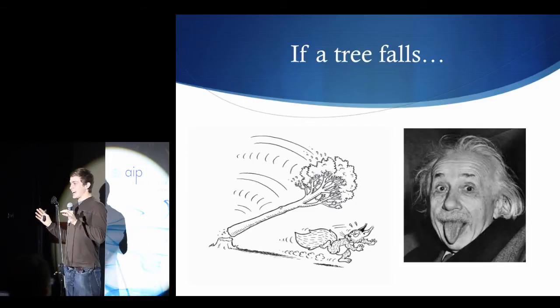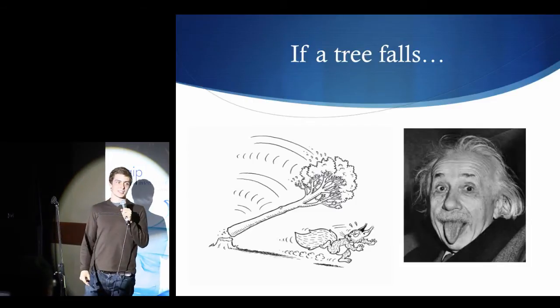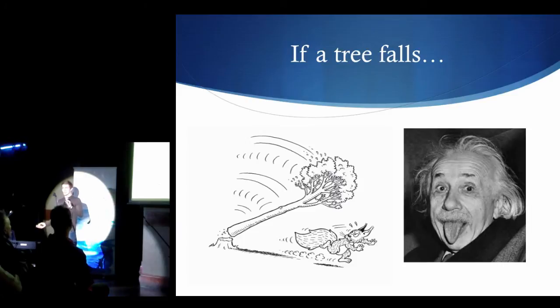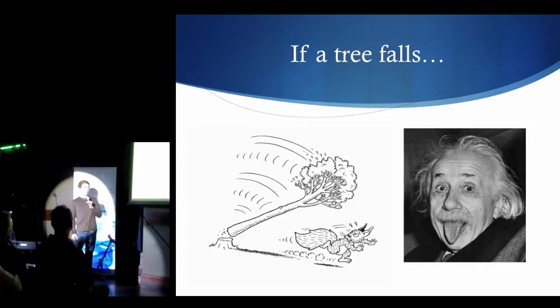Einstein now hated this idea. He believed in something called objective reality, which means that everything happens and everything exists no matter who observes it. It doesn't need an observer. Everything sort of collapses on its own and you find yourself observing whatever happened. It doesn't depend on the observer. So that's one theory that Einstein hated because he says God does not play dice. I'm sure many of you have heard that one.